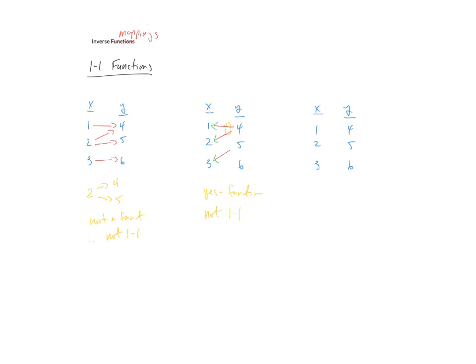In the last mapping, maybe we'll take a one-to-five, a two-to-four, and a three-to-six. So similar conversation. Yes, it's a function. And if we change the direction to create that reverse mapping, now you can also see that it satisfies the original definition of the function where only one arrow is coming out, creating that uniqueness. So yes, this would be a one-to-one function.